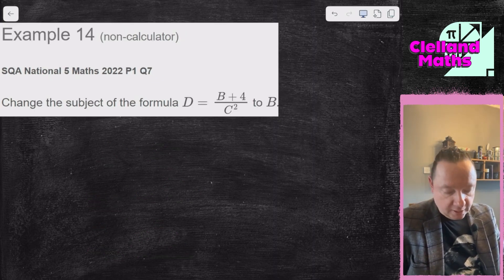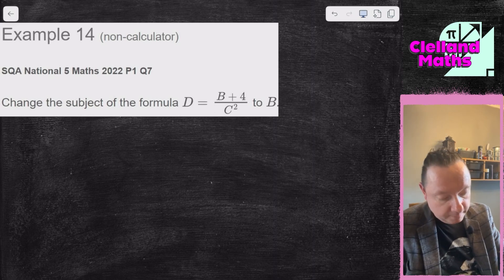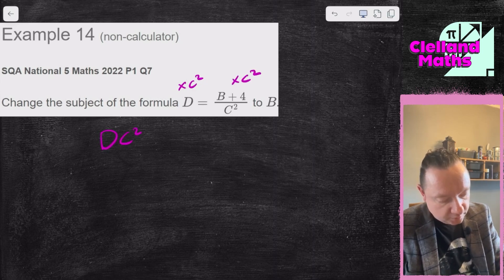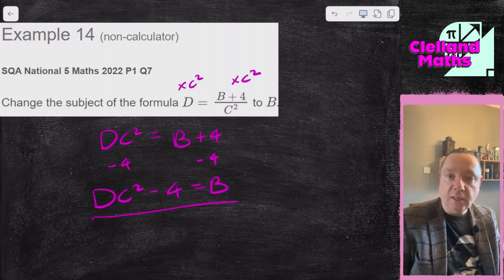Example 14 — SQA National 5 Maths 2022, Paper 1, Question 7. Change the subject of the formula d = (b + 4) / c² to b. Times both sides by c² to get rid of the fraction: dc² = b + 4. Take away 4 from both sides: dc² minus 4 equals b. And we're done.